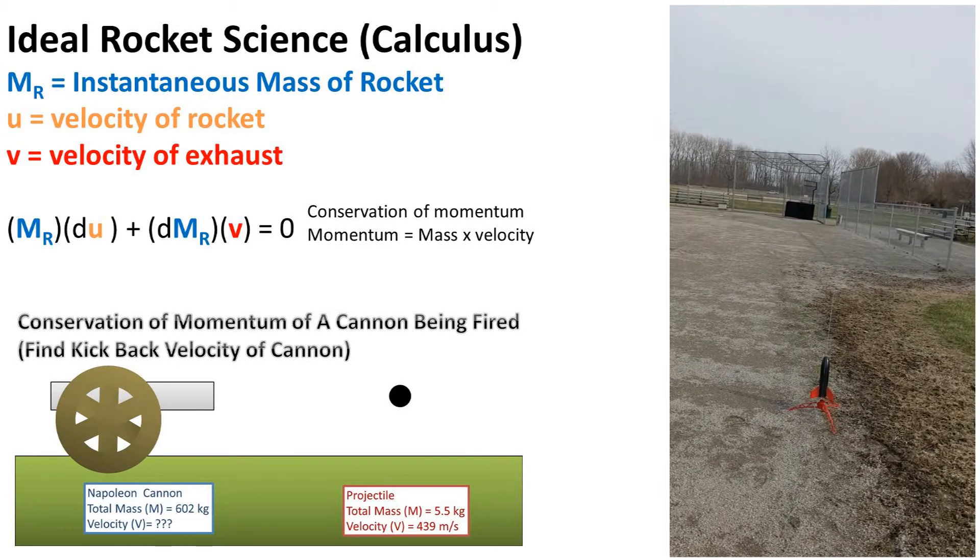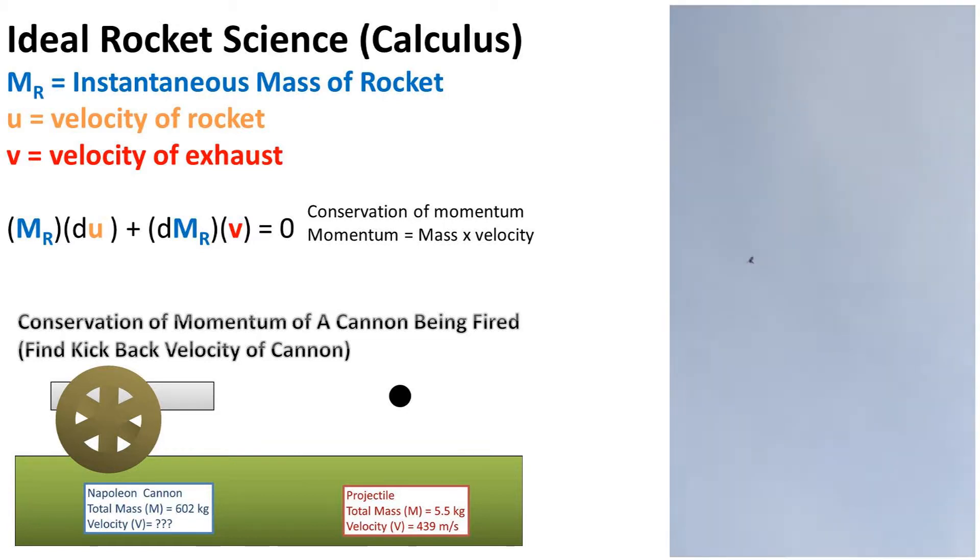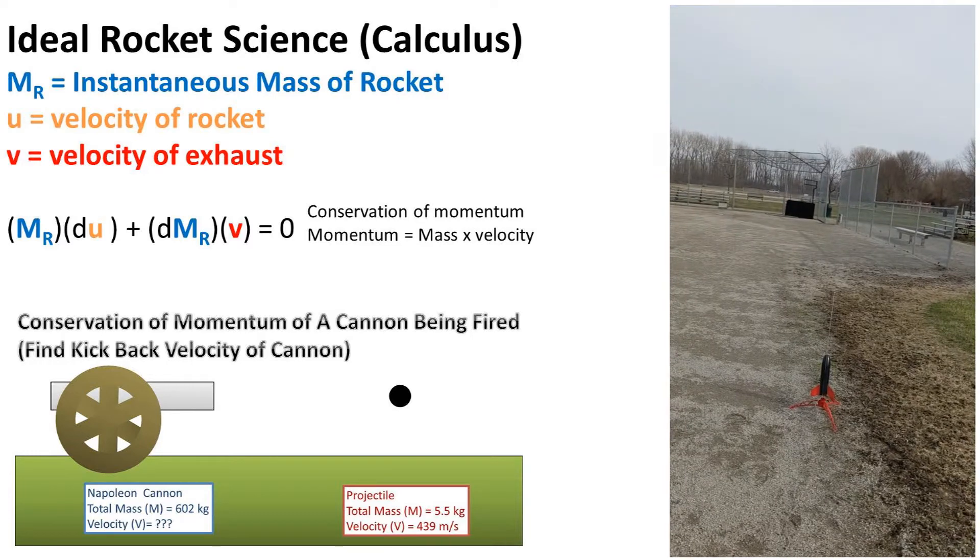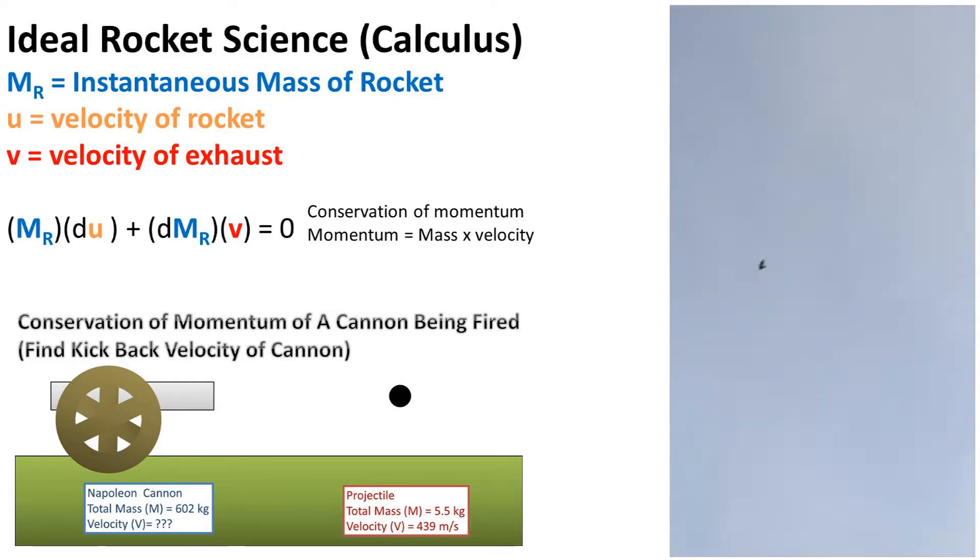So if the rocket is hurling out mass in the form of exhaust, then the rocket must be moving in the opposite direction to maintain a constant momentum of the system, or in other words, keep the momentum of the system at zero.